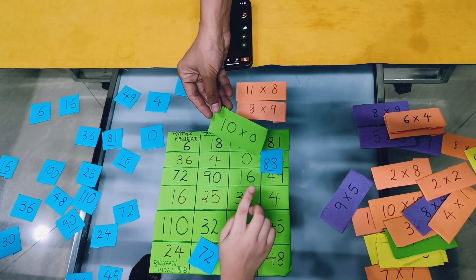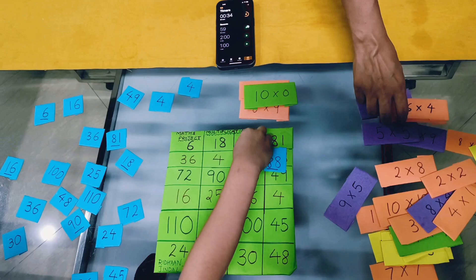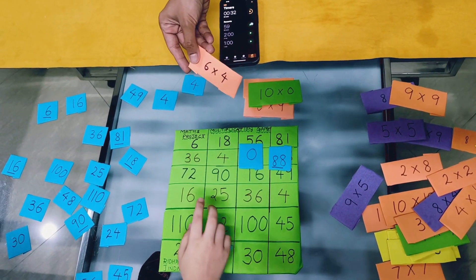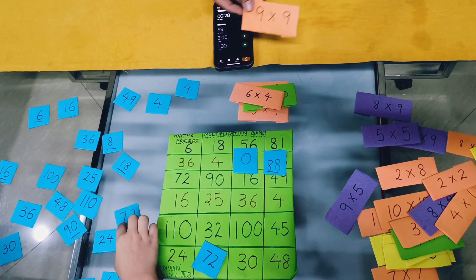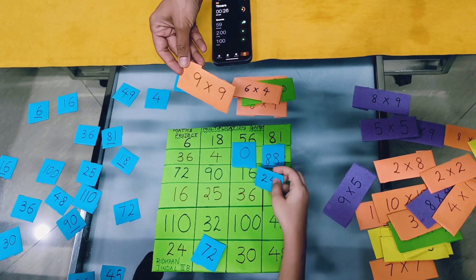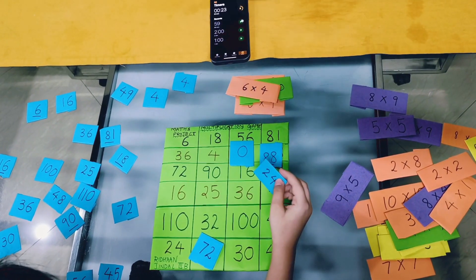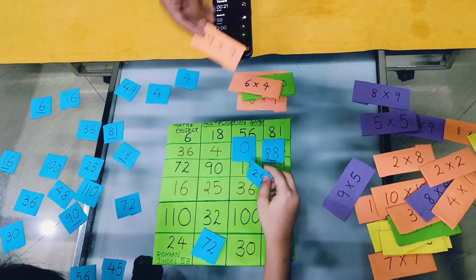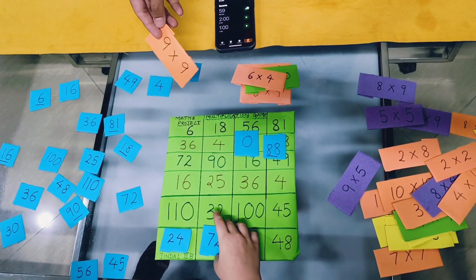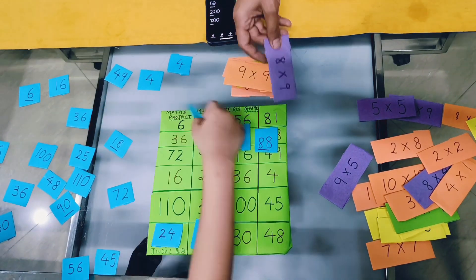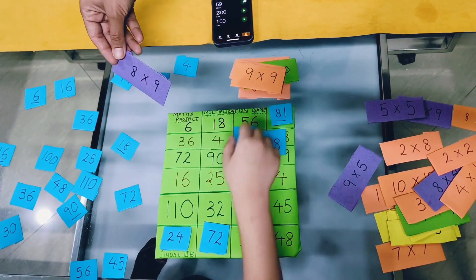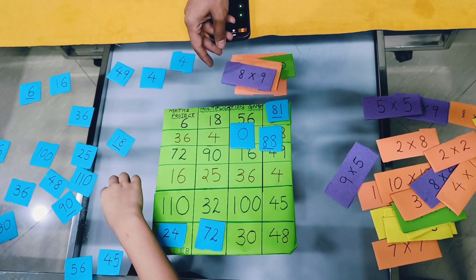10 0's are 0. 6 4's are 24. 9 9's are 81. 8 9's are 72. 5 5's are 25.